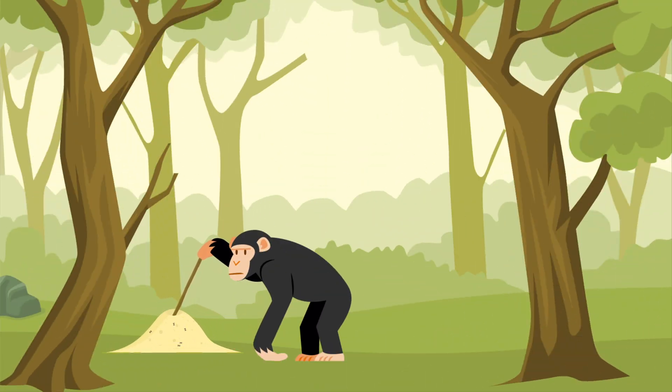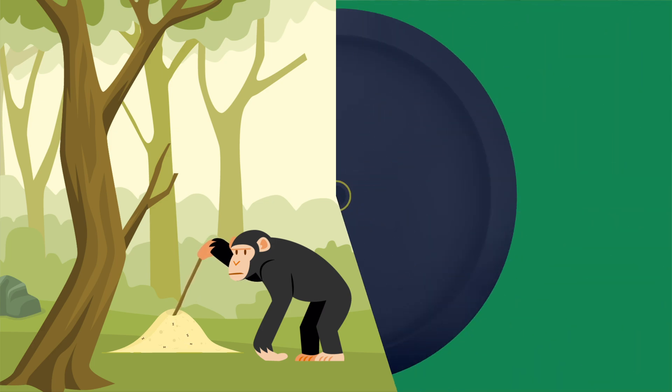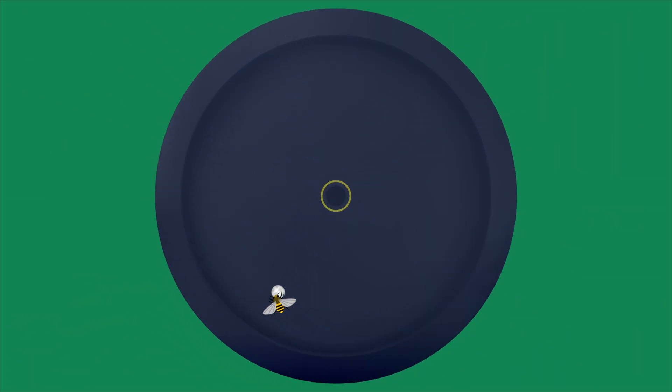They can also learn how to make use of different tools. Even a tiny insect can learn to work on a task quickly. In one experiment, bumblebees learned how to push a ball into a hole for a reward.